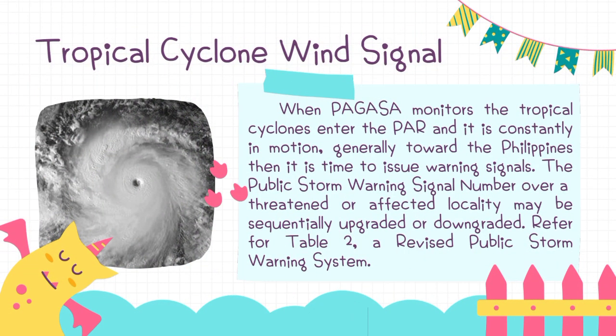Tropical cyclone wind signals: when PAGASA monitors tropical cyclones entering the PAR and they are constantly in motion generally toward the Philippines, it is time to issue warning signals. The public storm warning signal number over a threatened or affected locality may be sequentially upgraded or downgraded.